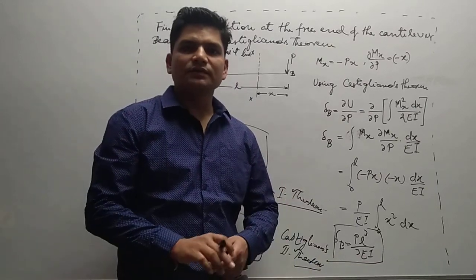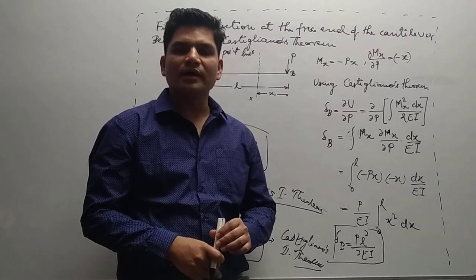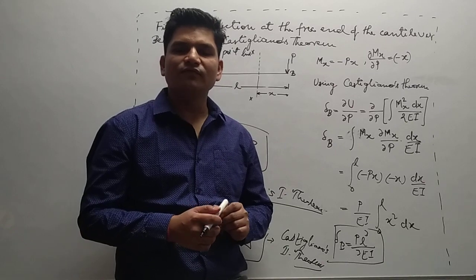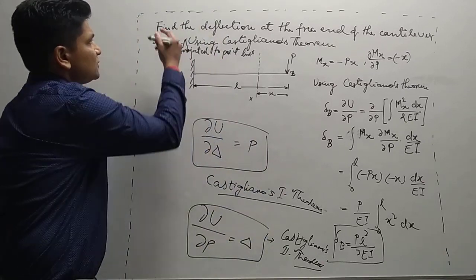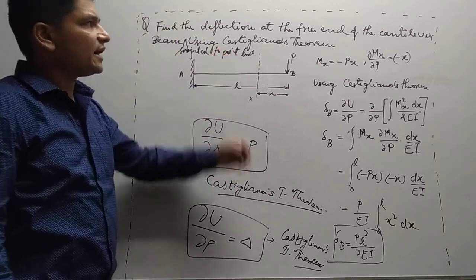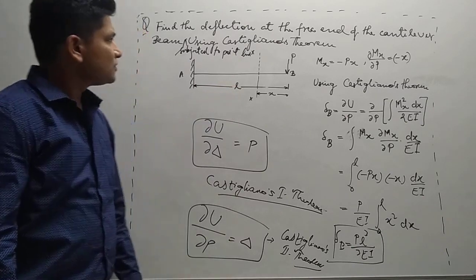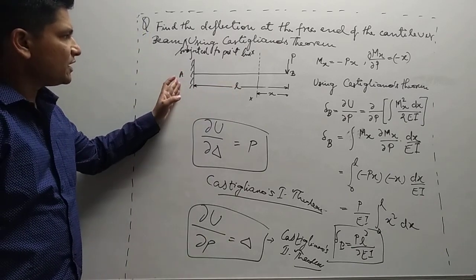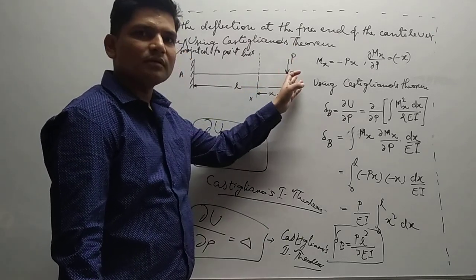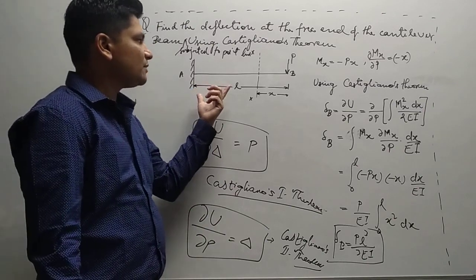Based on this concept, we will solve one numerical on a cantilever beam subjected to a point load at the free end, and we are interested in finding the deflection at that free point. We need to find the deflection at the end of the cantilever beam using Castigliano's theorem. This is our cantilever beam with point A and point B, having a vertical load P at the free end, and the span of this cantilever beam is L.